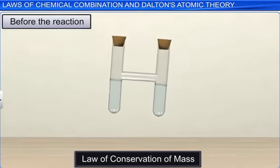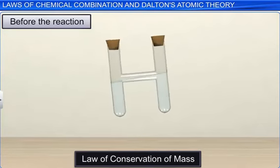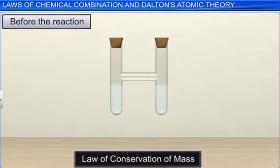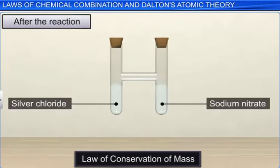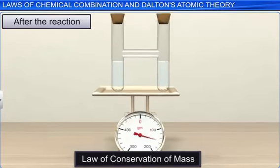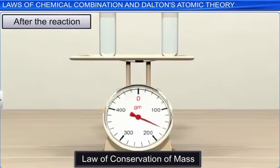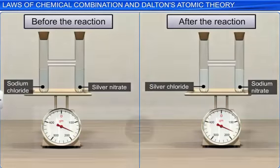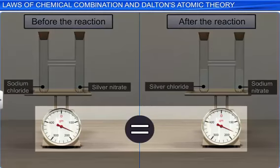Now, tilt the tube to mix the solutions thoroughly. A reaction takes place and we notice that a white precipitate of silver chloride is formed in the tube, along with sodium nitrate solution. Let's weigh the tube after the reaction. We observe that the weight remains the same.